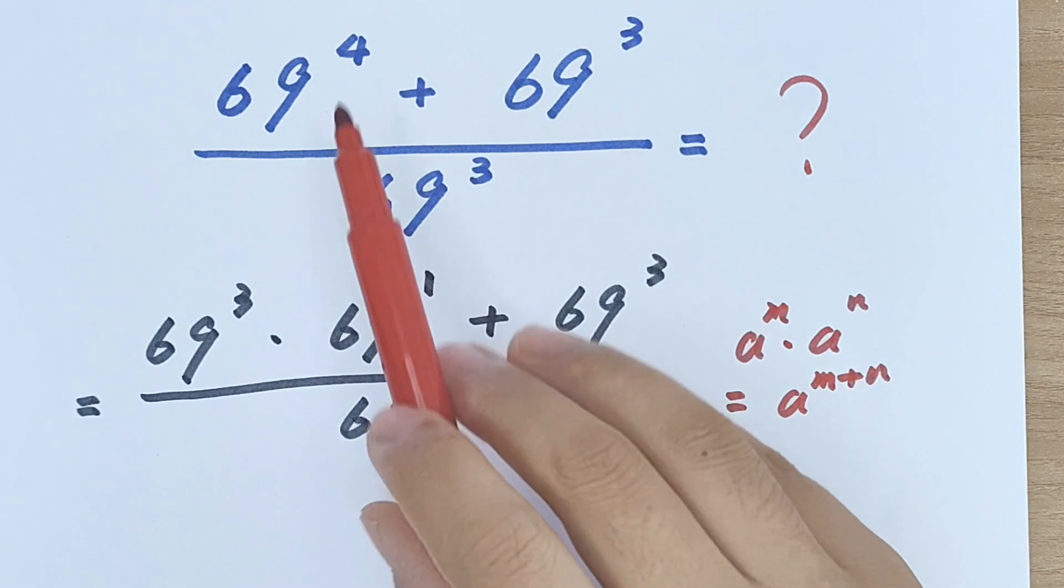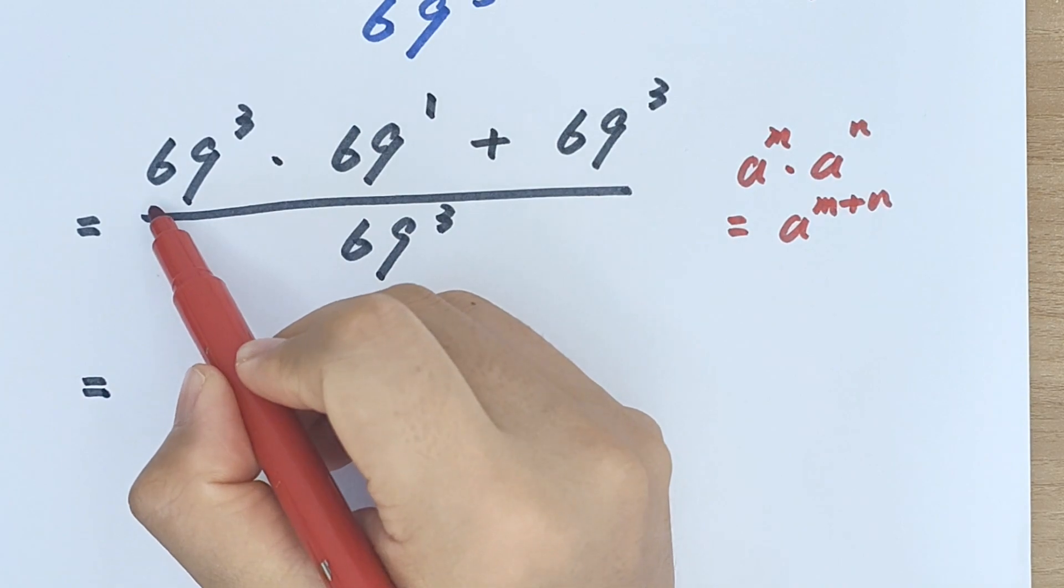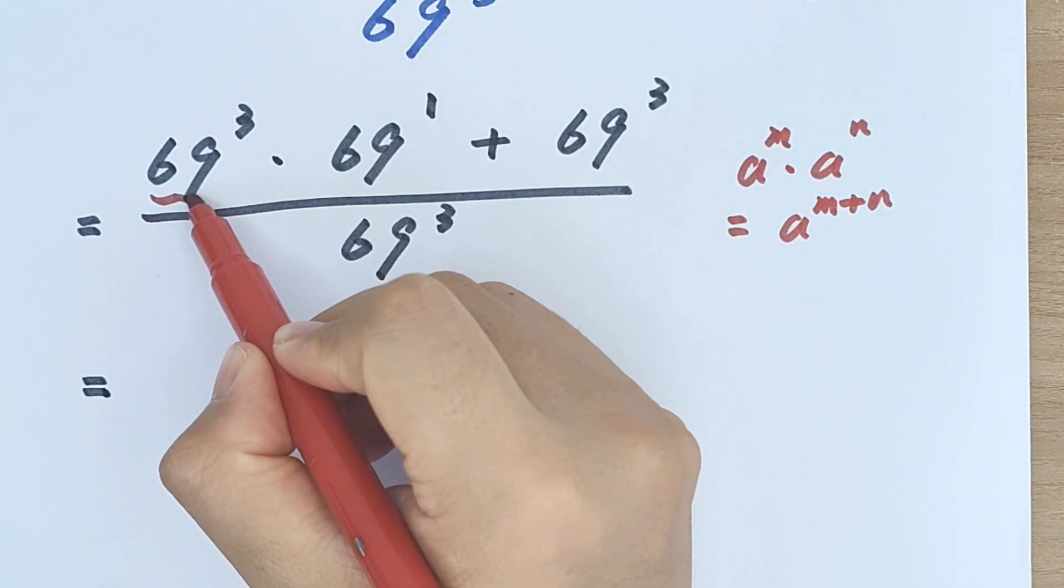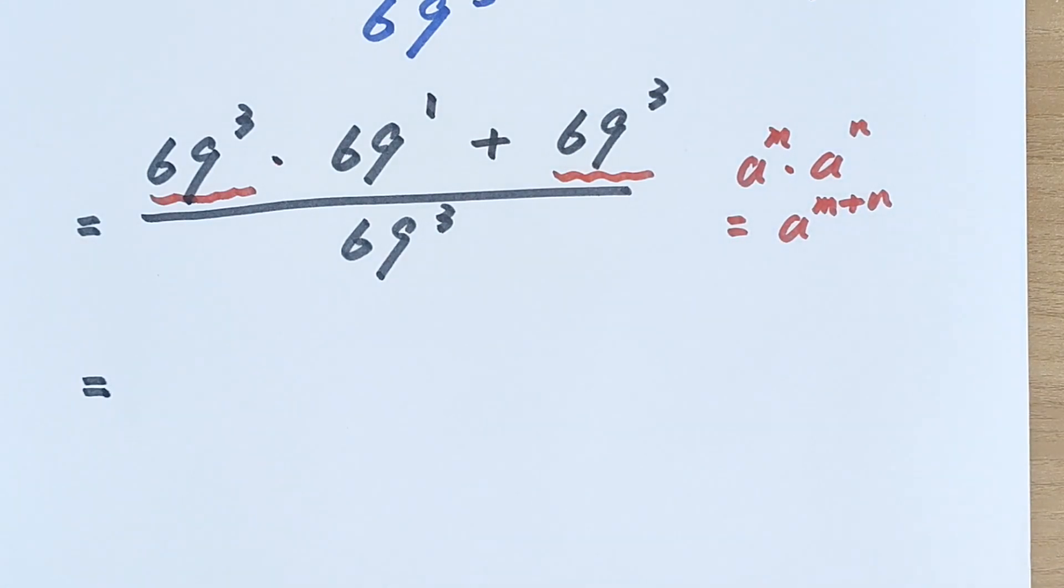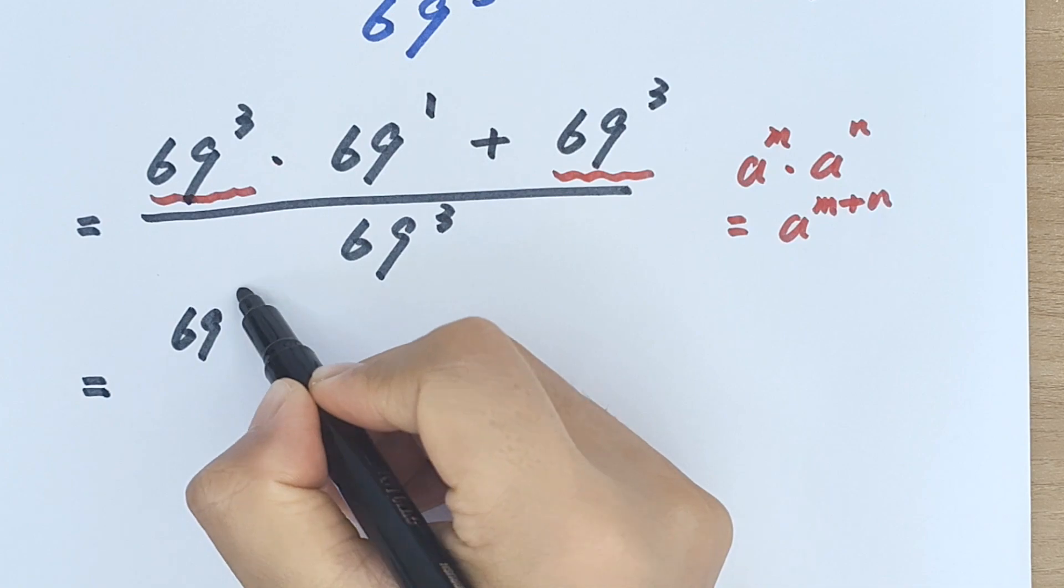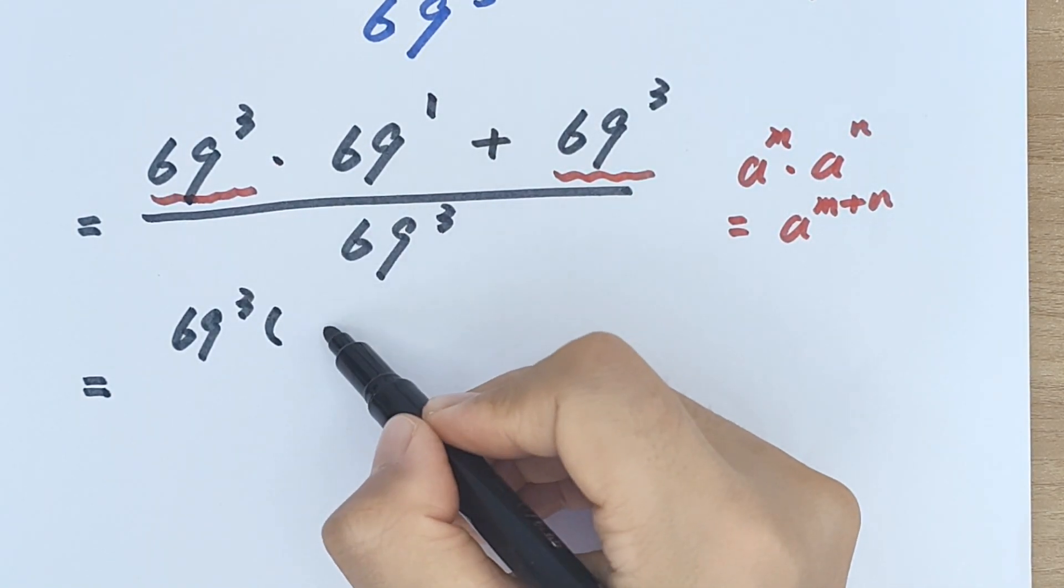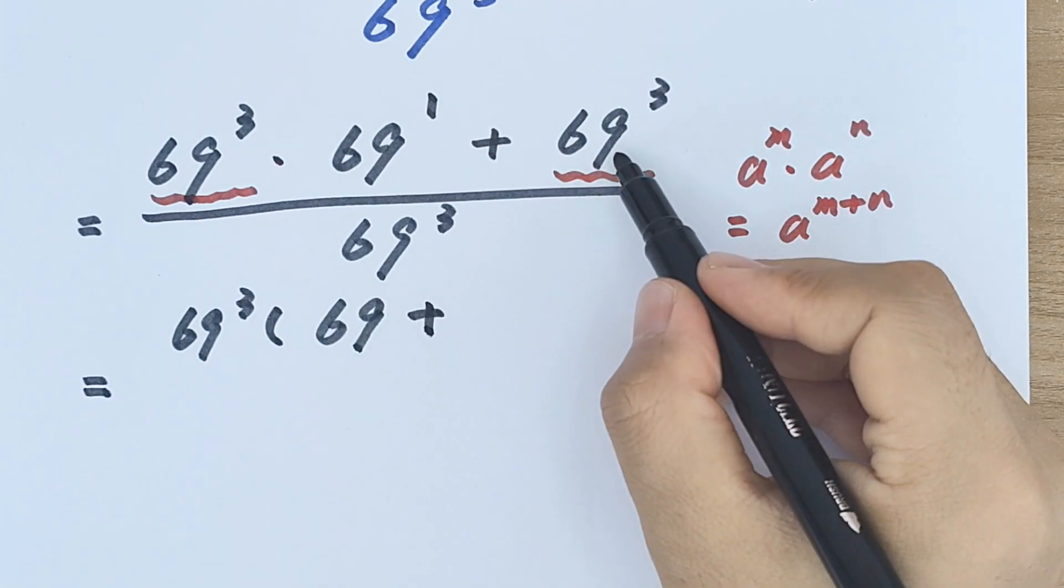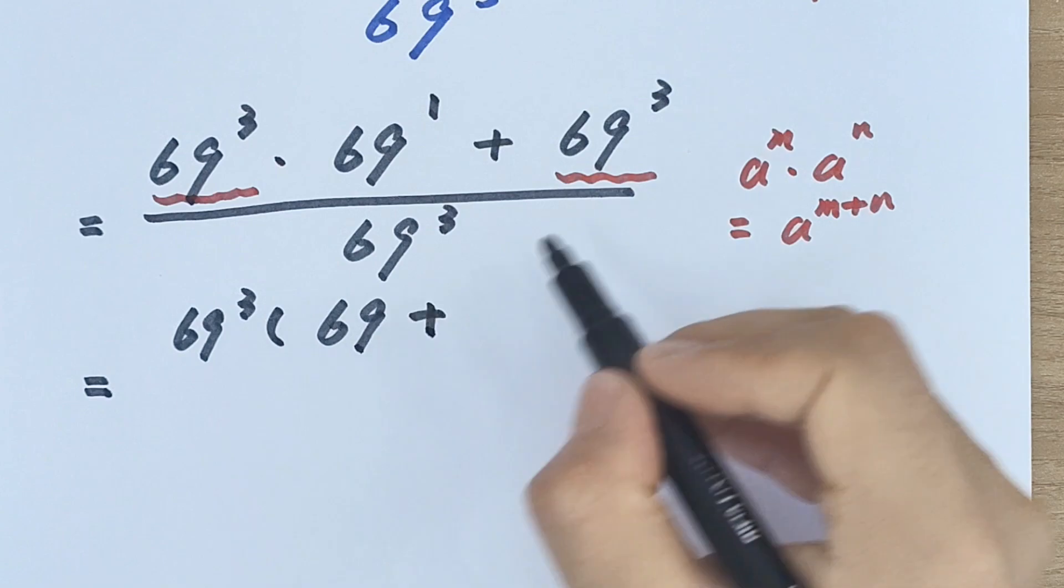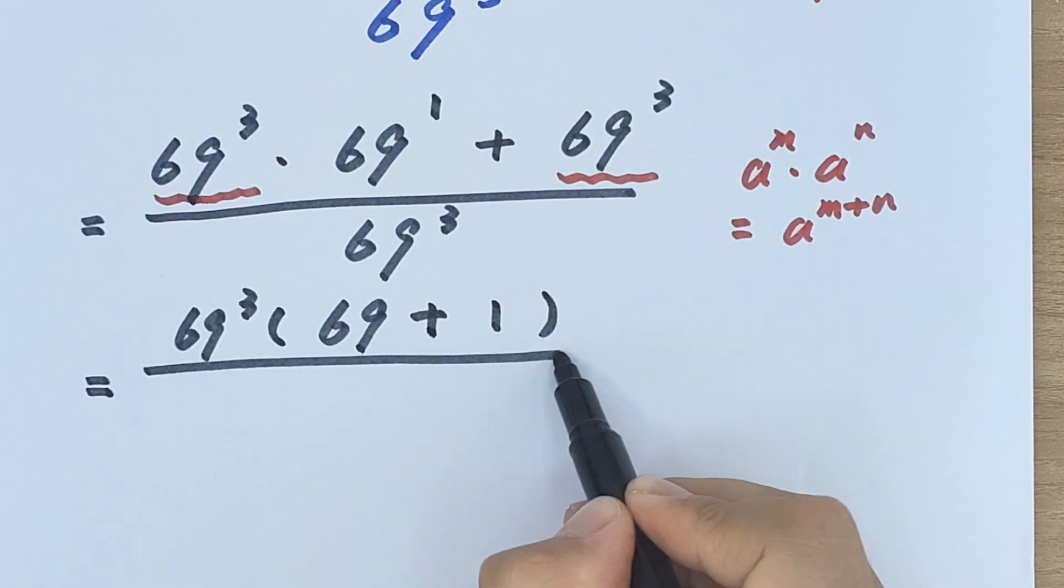Then it will be, now 69 cubed is common so we can take this out of the bracket. So here is 69 plus, out of the bracket so here is 1, divided by 69 cubed.